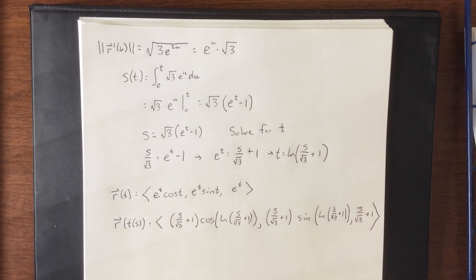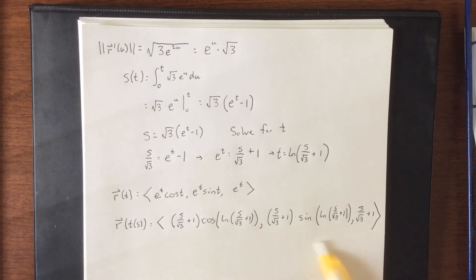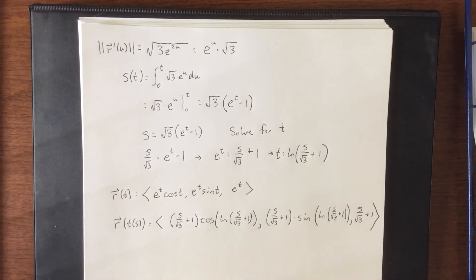So once again, to interpret what this actually means, I say I'm starting at t equals zero on the given space curve. I want to travel s units along that curve. This function right here tells me exactly the point in space where I'm going to wind up after I travel s units.